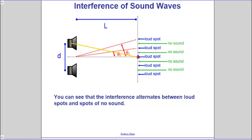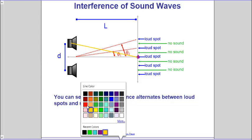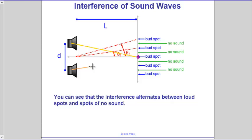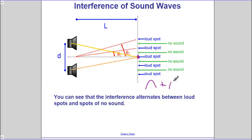Next, we're going to have another wave traveling from the other speaker, and I'm going to make this a different color. This wave is going to travel out — some distance in some time. If they travel the same distance and it takes the same amount of time, that means at that location we'd have a crest meeting a crest, and we get a large loud spot.